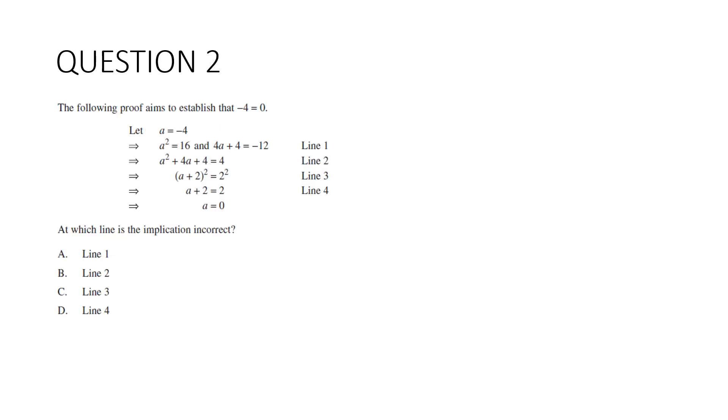Question 2. The following proof aims to establish that -4 is equal to 0. At which line is the implication incorrect? Let's go through it. Let a equal -4. Therefore, a² is equal to 16. That's true. And 4a + 4 is equal to -12. True.